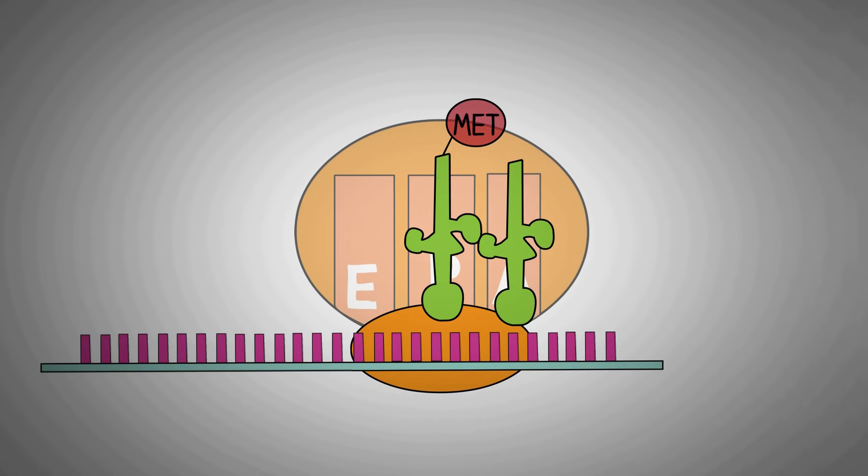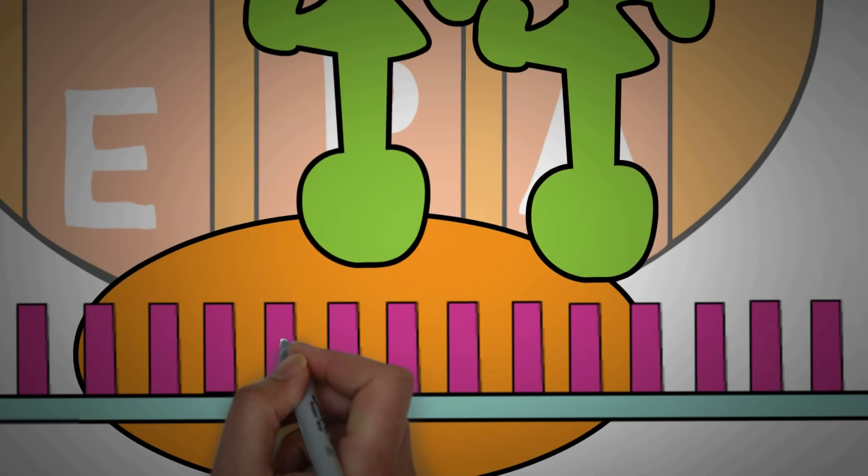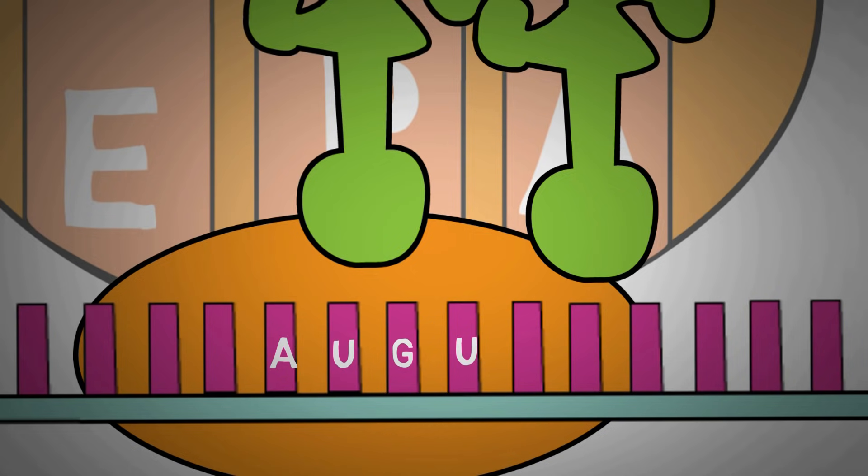Now, what happens is, the A site receives the next tRNA, which matches the codon next in the sequence. If we zoom in, we can see that the first codon is the start codon, the AUG, to which the tRNA attached will have the amino acid methionine.